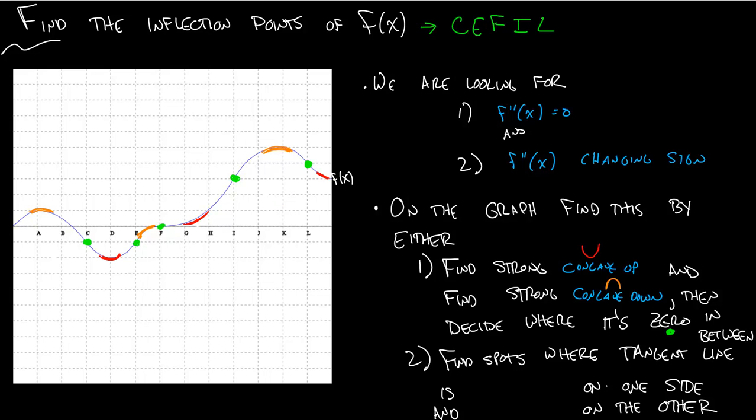Another thing you can try is draw some tangent lines. So let's draw some tangent lines. We'll draw it in pink here. And what we're going to look for is spots where the tangent line is above the graph on one side of where it touches the graph and below the graph on the other side. So what do I mean by that? So let's draw this tangent line here. Now, look at that. The graph is below on each side of the tangent line where it touches.